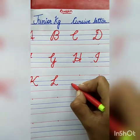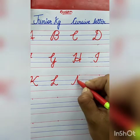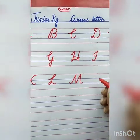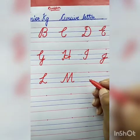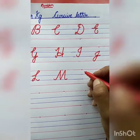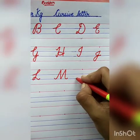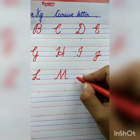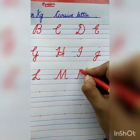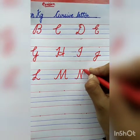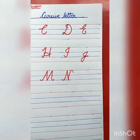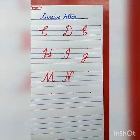Now the next letter is M. Slanting line, slanting line, slanting line, one more slanting line. M for monkey. The spelling of monkey is M-O-N-K-E-Y, monkey. Now the next letter is N for nest. See here: slanting line, slanting line, slanting line. N for nest. The spelling of nest: N-E-S-T, nest.